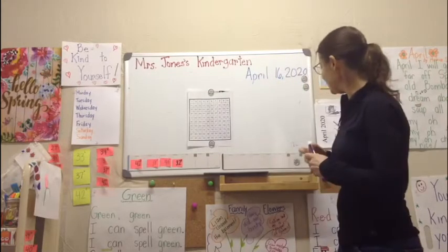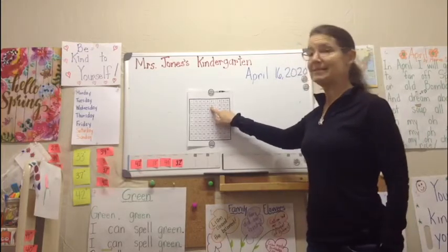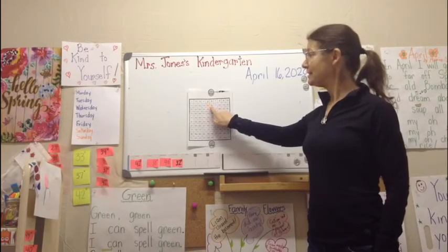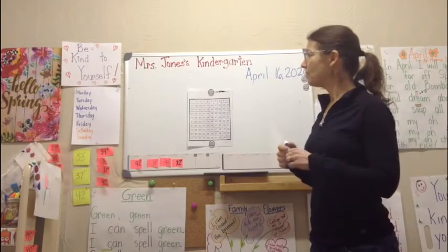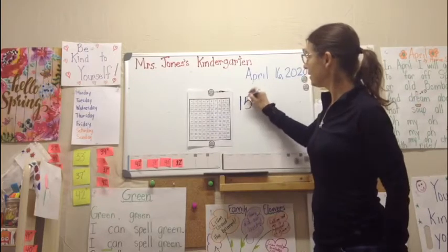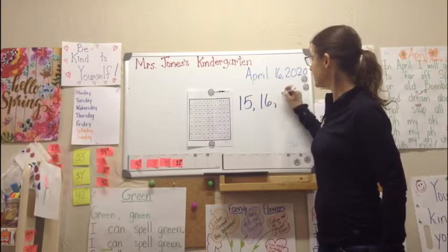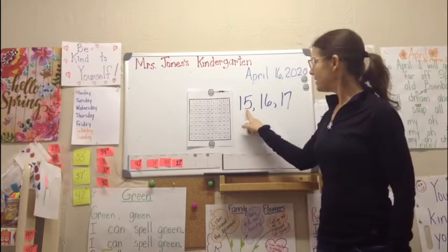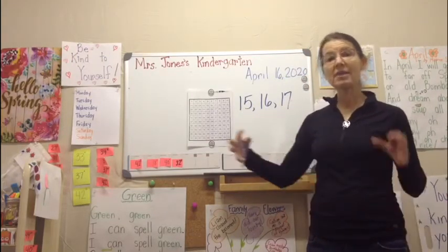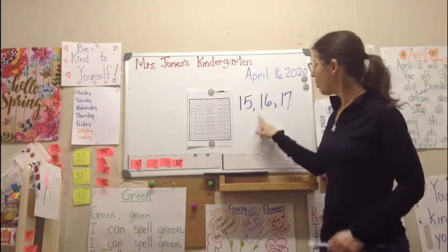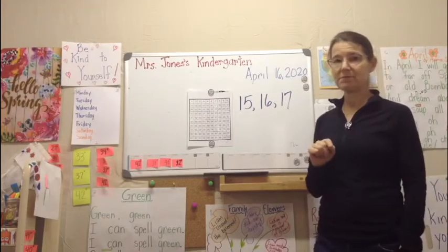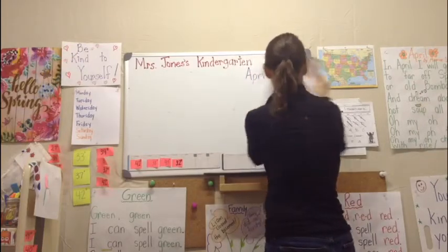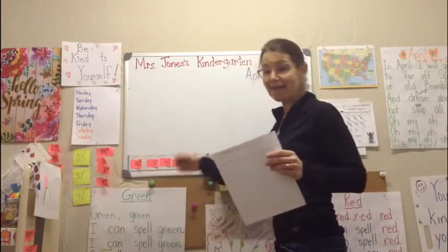We are at April 16th. What number came before the 16th? 15. What number came after the 16th? 17. And when we're writing those digits — 15, 16, 17 — the one stands for that one group of 10, and this stands for the ones that were left over that haven't made a group of 10 yet. So every day, thinking about our tens, our ones, our numbers — so many ways to make connections to math every single day.